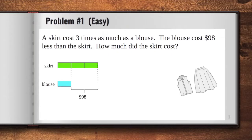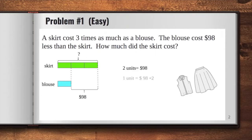Now, remember, we are looking for the cost of the skirt. Examining our model, we can see that $98 here is actually equal to two units. So we can use this clue to solve our problem. Two units is equal to $98, and to get one unit, we have to divide the amount by two.